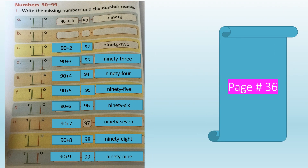Now we are on the last page, page 36, where we are going to study numbers from 90 to 99. In the abacus we have two rods: the first for counting ones and the second for counting tens. In part A we have 0 ones and 9 tens — 90 plus 0 makes 90. The number name is N-I-N-E-T-Y, 90.